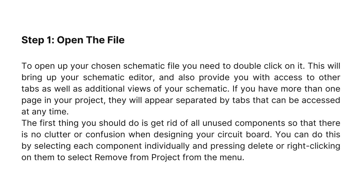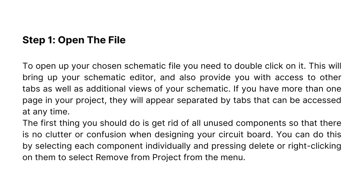Step 1: Open the file. To open your chosen schematic file, you need to double-click on it. This will bring up your schematic editor and also provide you with access to other tabs as well as additional views of your schematic. If you have more than one page in your project, they will appear separated by tabs that can be accessed at any time. The first thing you should do is get rid of all unused components so that there is no clutter or confusion when designing your circuit board. You can do this by selecting each component individually and pressing Delete, or right-clicking on them to select Remove from Project.